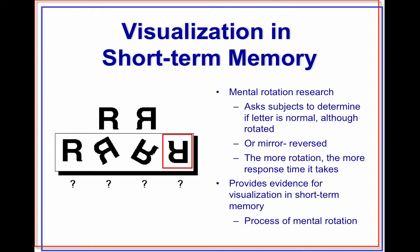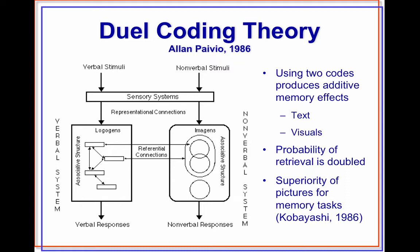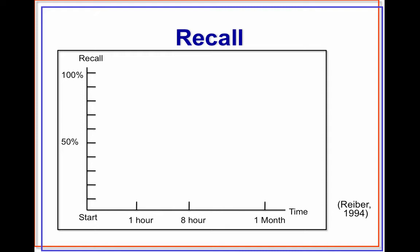Dual coding theory hypothesizes that using two codes produces additive memory effects. Therefore, you should use both text and visuals. When we look at recall, we find that we forget things over time. Even if we recall 70%, within one hour that drops, and in a month's time it drops considerably.